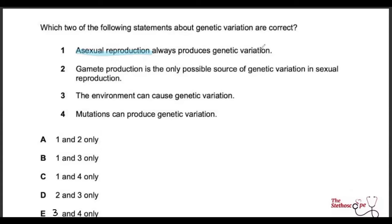Statement two says gamete production is the only possible source of genetic variation in sexual reproduction — again this is false. In sexual reproduction, mutations can happen in the DNA which create genetic variation not associated with the initial production of gametes. So statement two is also incorrect.